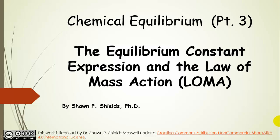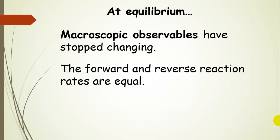Chemical equilibrium part three: the equilibrium constant expression and the law of mass action. Let's remind ourselves of a few things about equilibrium. Macroscopic observables have stopped changing once the system reaches equilibrium, and the forward and reverse reaction rates are equal once the system reaches this equilibrium state.